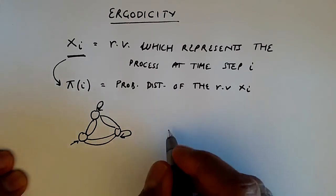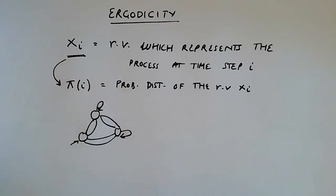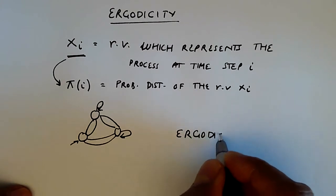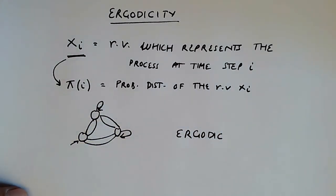So if we have such a stability or some kind of convergence property, then this chain would be thought of as being ergodic. So that's, intuitively speaking, what an ergodic chain is.